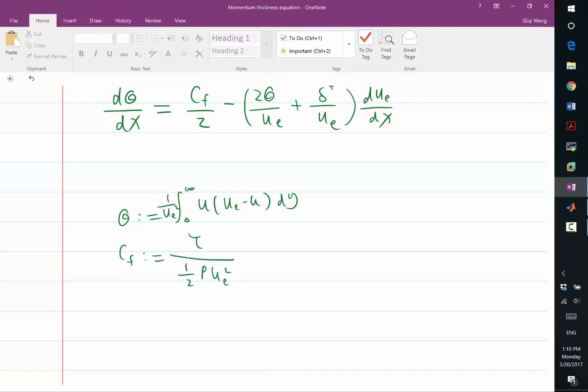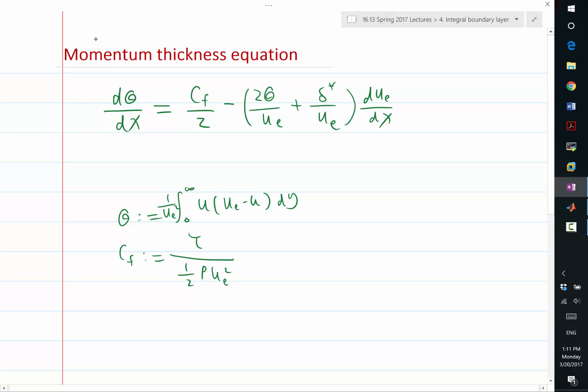As with any other modeling problems, the first step is to identify what are the closure terms, what are the terms we need to model as a function of the known variables. So theta here is considered as a known variable because if we solve this using ODE45 in MATLAB, for example, I want to code the entire right-hand side as a function of x and theta. So I want to look into the right-hand side and figure out which are the terms I know, which are the terms I don't know as a function of x and theta.